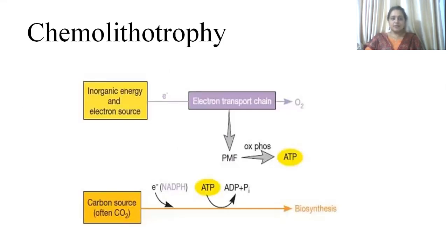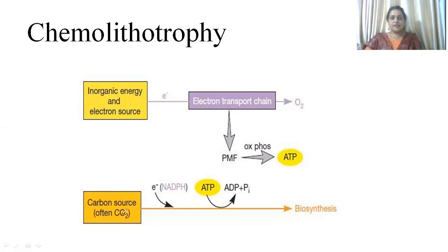Chemolithotrophs are known as rocketeers because they are utilizing inorganic substances as their energy source. They donate electrons by oxidizing inorganic compounds to the electron transport chain. The final electron acceptor is oxygen. Electrons are also transported via proton motive force, and through oxidative phosphorylation, ATP is generated. This ATP is utilized for carbon dioxide fixation, as CO₂ is often the main carbon source in chemolithotrophs, and is converted to ADP in biosynthesis.